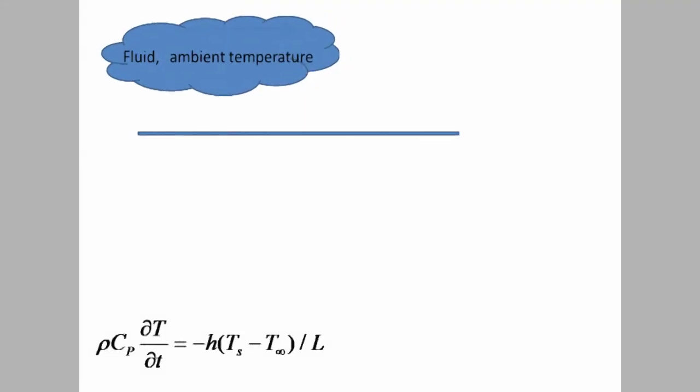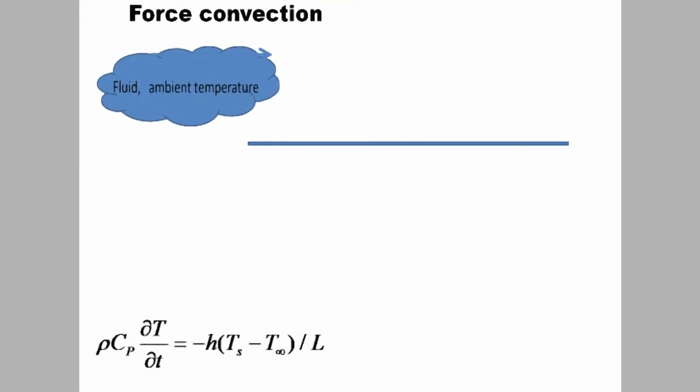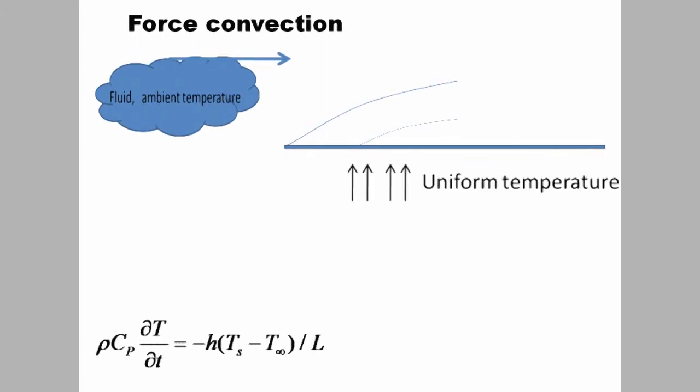In forced convection, fluid motion is created by some external means. In the case of forced convection, the Nusselt number depends on the Reynolds and Prandtl numbers.